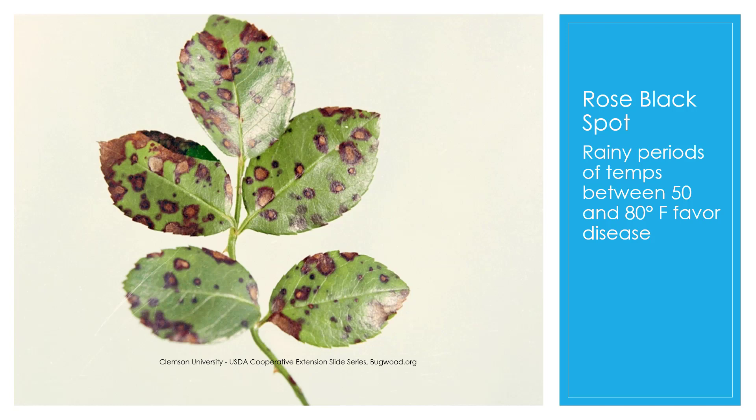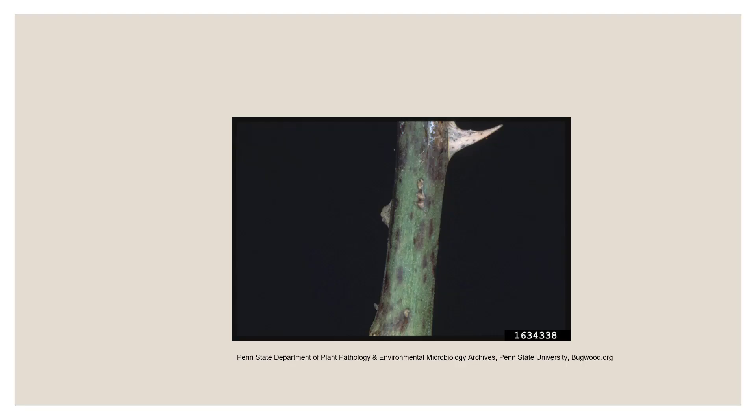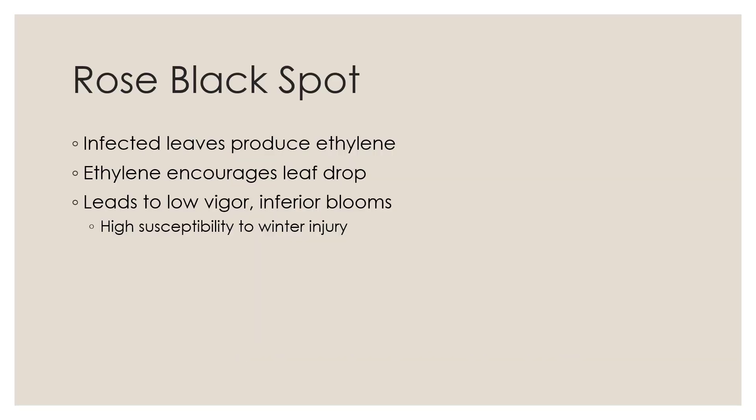Rainy periods with temperatures between 50 and 80 degrees favor the disease — perfect conditions in May and June. You'll also see it on the stems. Infected leaves produce ethylene, which encourages leaf drop, leads to low vigor, poor blooms, and leaves the plant very susceptible to winter injury.